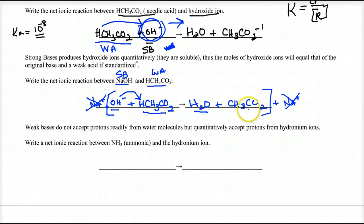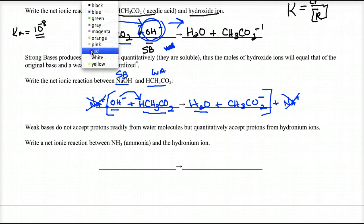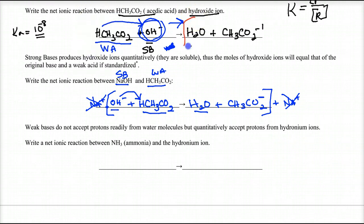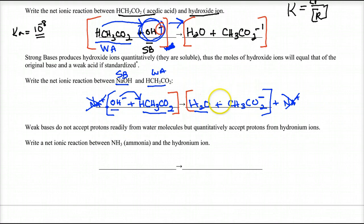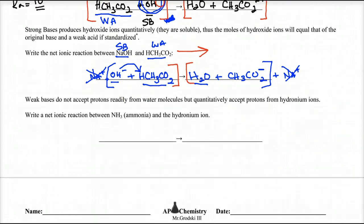Water doesn't break apart well. And the charge on both sides should be the same — notice this side is -1 and this side is also -1. So this strong base is forcing the action of the weak acid to make it directional. As long as I have enough hydroxide, I'll force every single weak acid molecule to react.